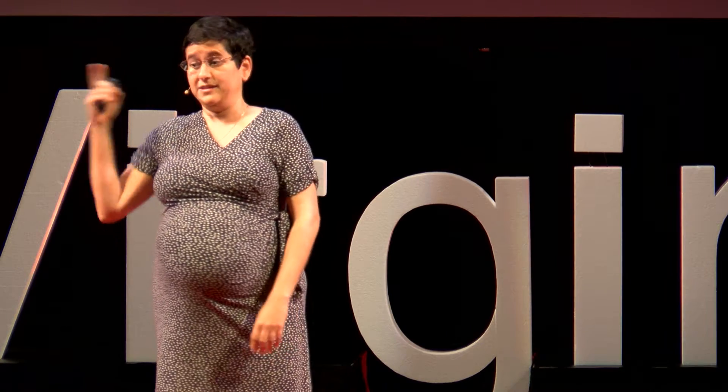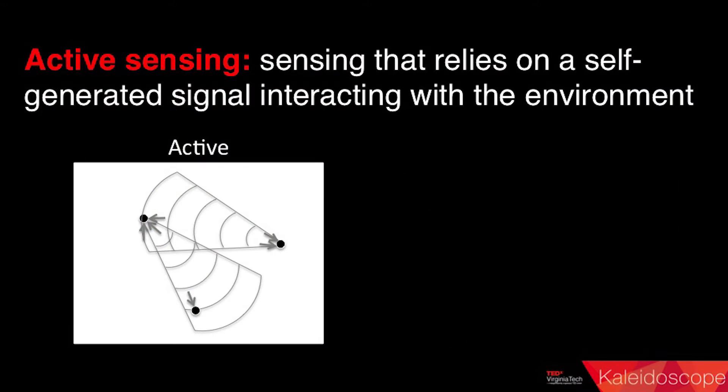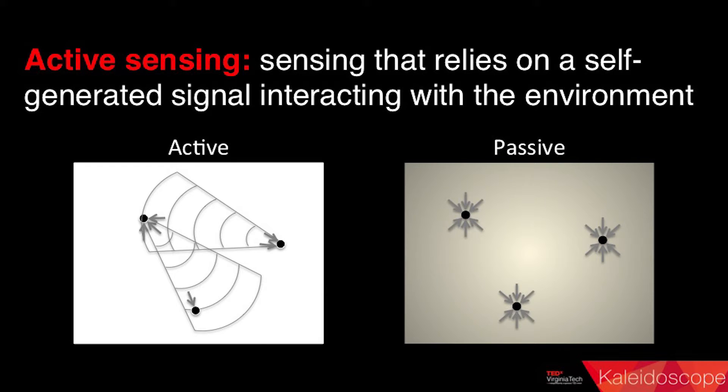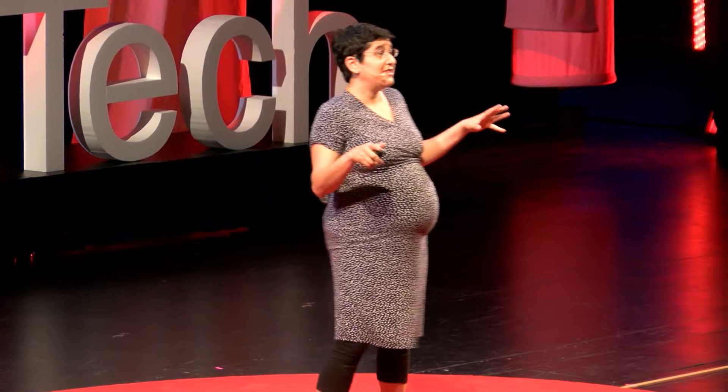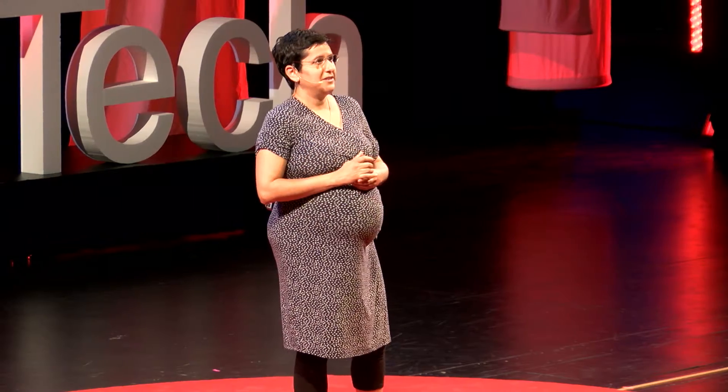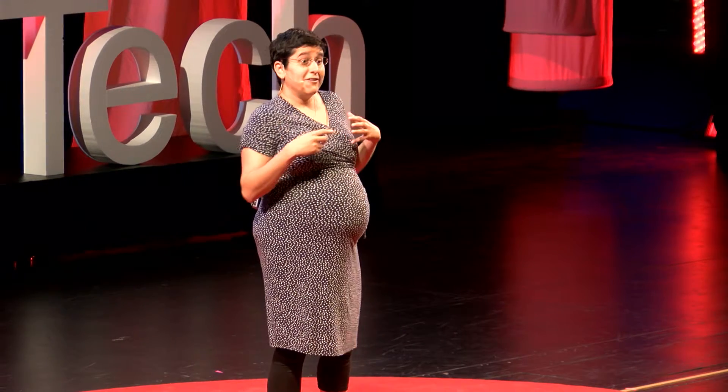Jamming plagues bats, and also any engineered system that uses sensing like bats — like sonar for underwater vehicles. We call this active sensing: sensing that relies on generating a signal that interacts with the world and comes back to you. Sonar does this with sound, LiDAR with light, radar with radio frequency — in contrast to passive sensing like vision. When bats are jammed, they actually exhibit behaviors to accommodate it: they change their frequency, go quiet for a while, and when flying in pairs through a maze, they echolocate less on average, suggesting they may actually collaborate to build maps of the world around them.